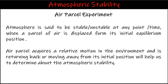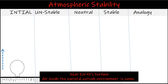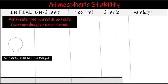Let's understand atmospheric stability using the air parcel experiment. We will move an air parcel from the ground and lift it to a certain height and release. There are three possibilities: it will sink back to the ground, it will continue to rise upward, or it will remain where it was left. The displacement of the air parcel with respect to its initial position will help us determine atmospheric stability. The air parcel is sealed so no mixing and exchange of air is possible. On the ground, the air inside and outside the environment is the same. After lifting and releasing at a certain height, the air inside and outside the parcel are not the same.